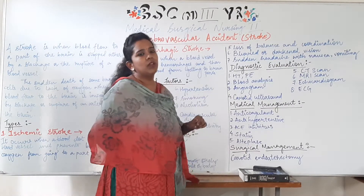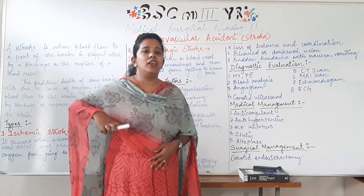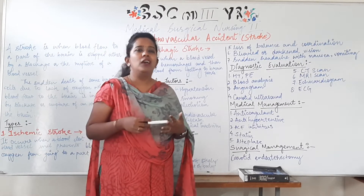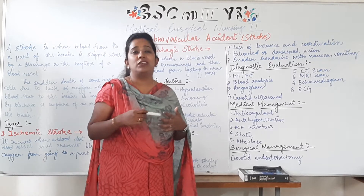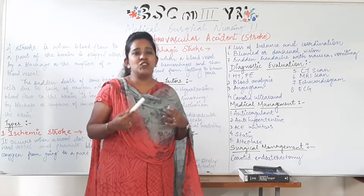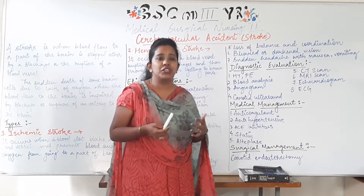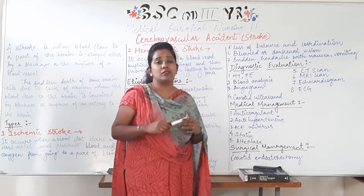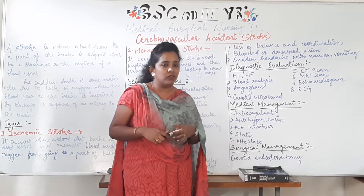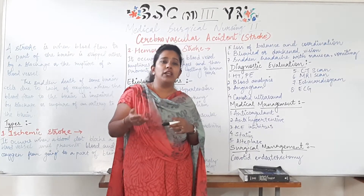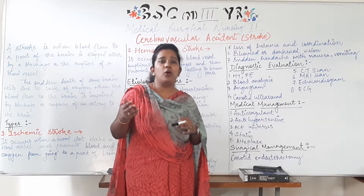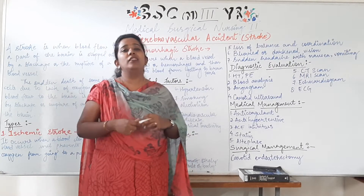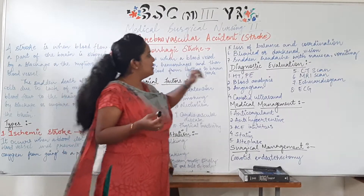Next is Diagnostic Evaluation. This includes history taking and physical examination. Blood analysis is done to check prothrombin time and glucose levels, which indicate brain functioning. Hypoglycemia suggests lower brain function; fast clotting time suggests clot formation; prolonged clotting time suggests hemorrhage possibility. All these findings come from blood analysis.